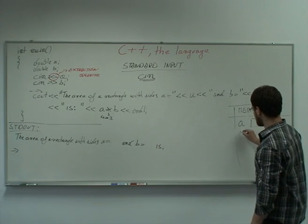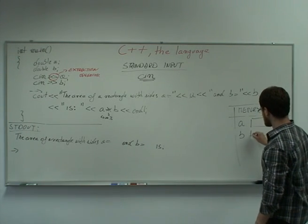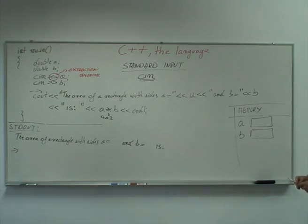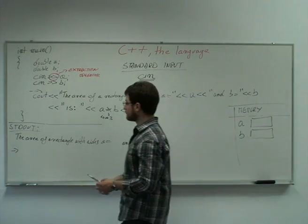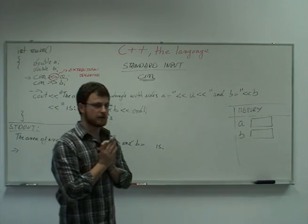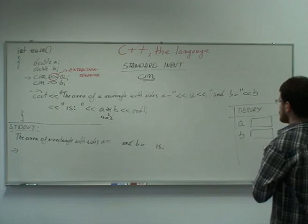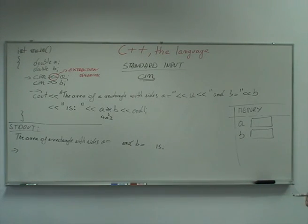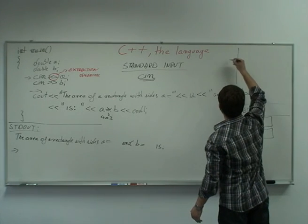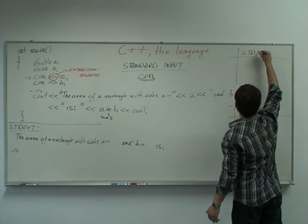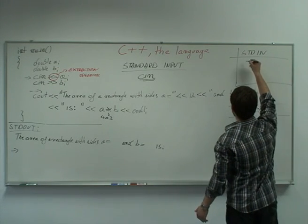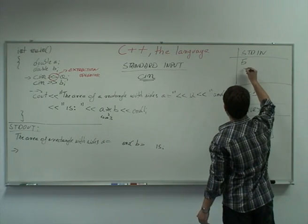The next statement introduces the variable B, which also has an empty container associated to it. The third statement reads information from the standard input interface. So I need to have two values on the standard input. And I'm going to write them down to the blackboard here. So this will be our standard input.